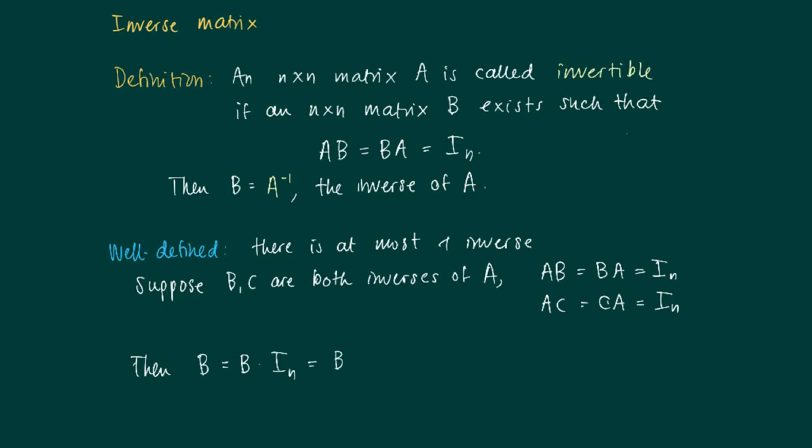Since we have associativity of matrix multiplication, this equals B times A times C, and B times A equals the identity matrix. An identity matrix times C equals C.